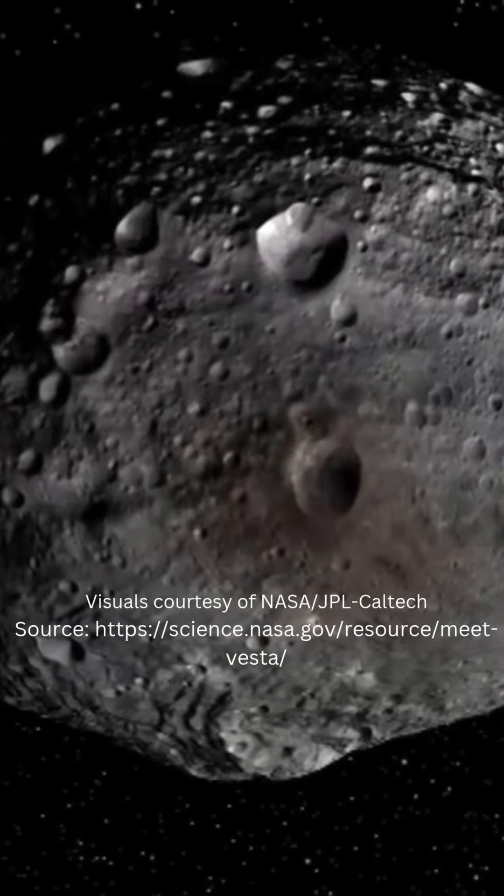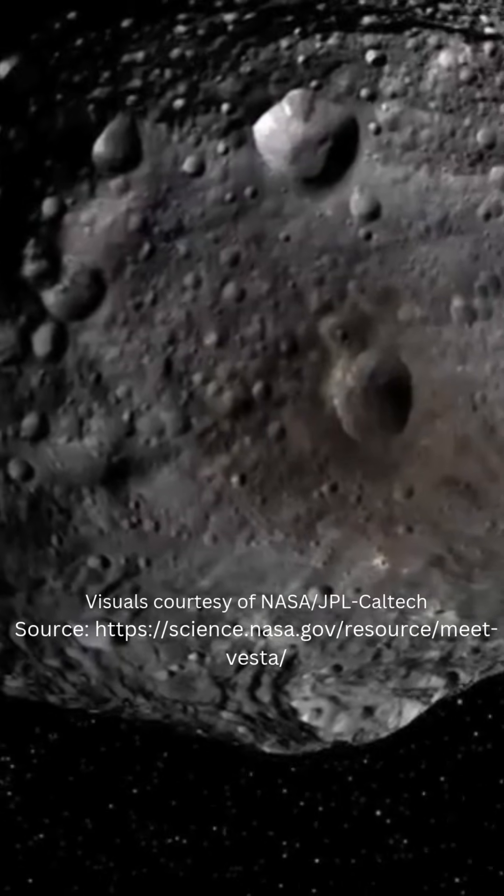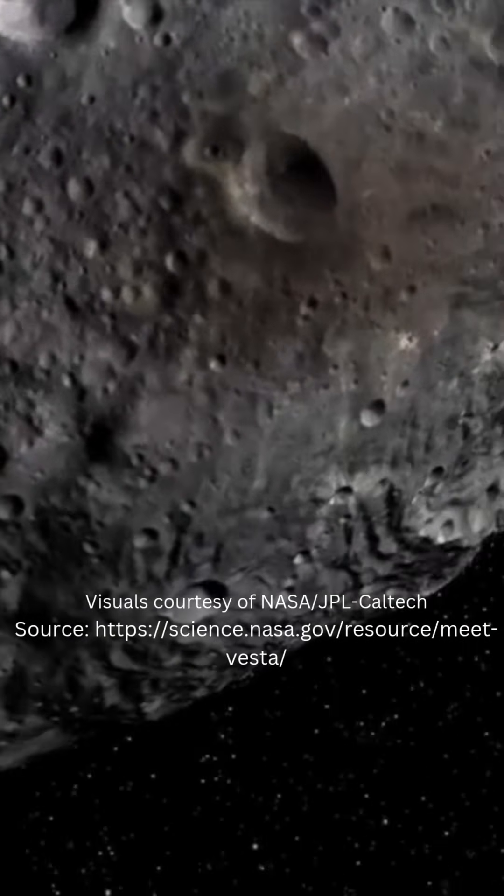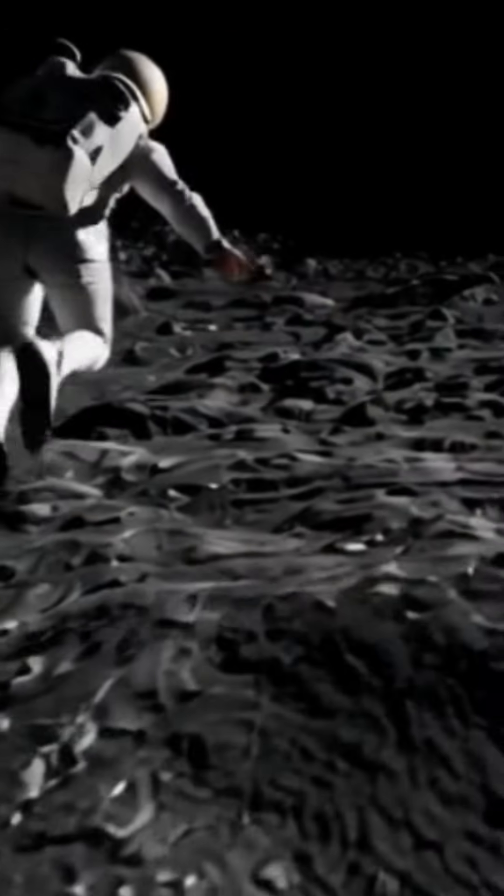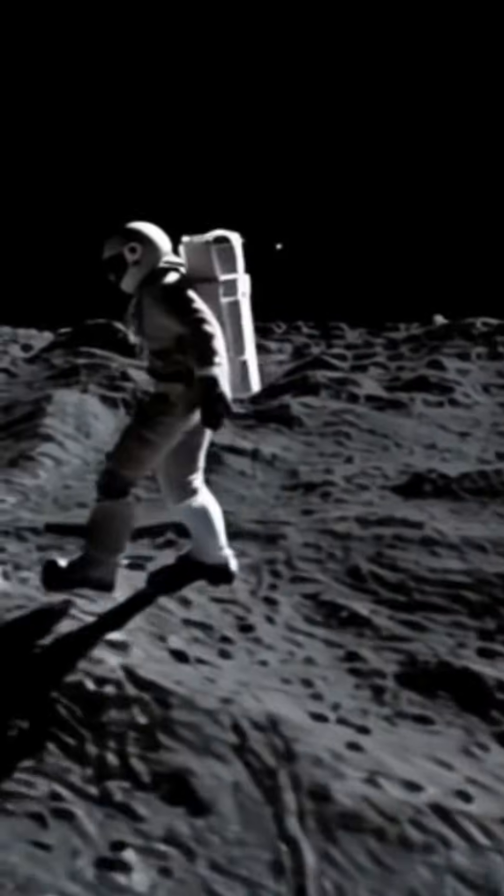Vesta is much larger. Jumping here is like jumping on the moon, more manageable. You'll go high and come down slowly. If you sprint and leap fast enough, you might escape, but you'd need serious power.